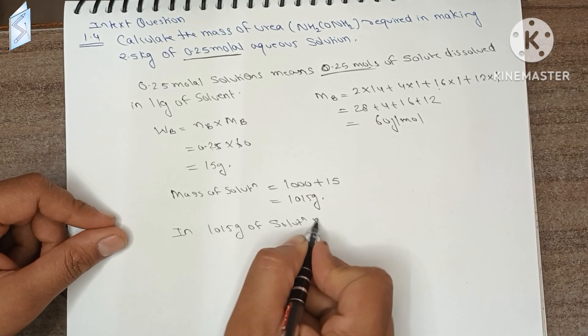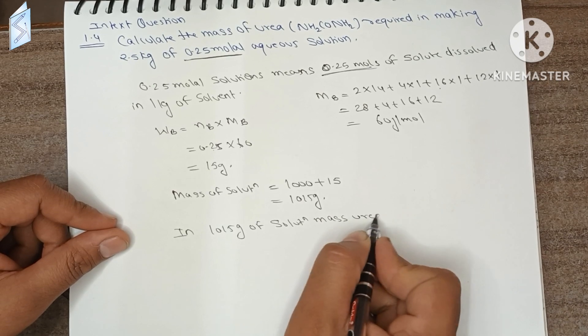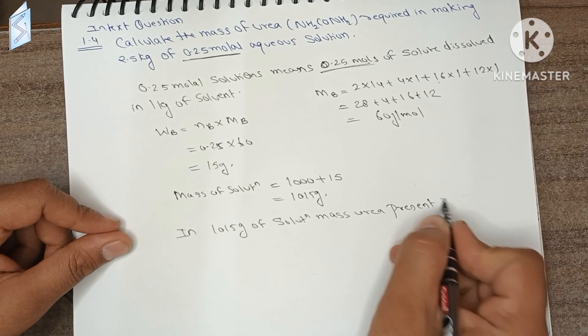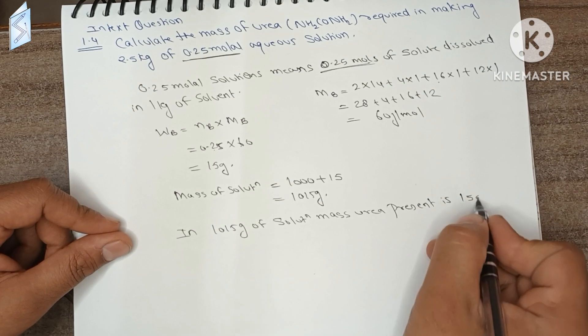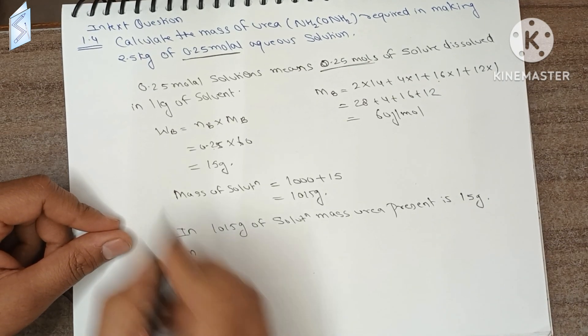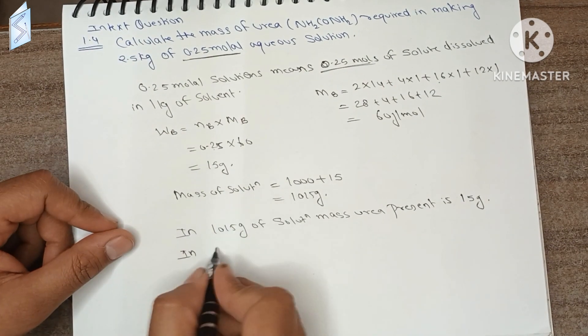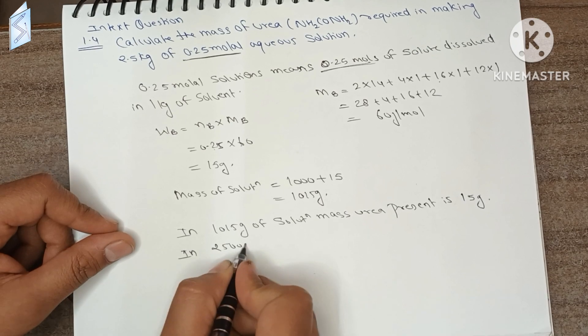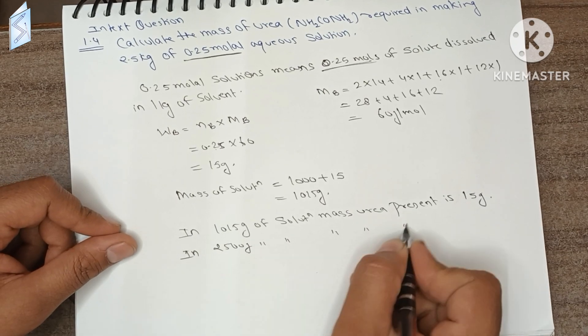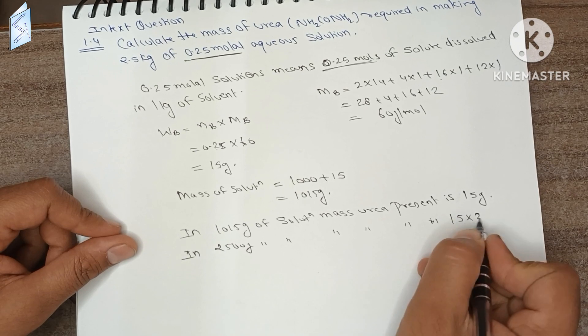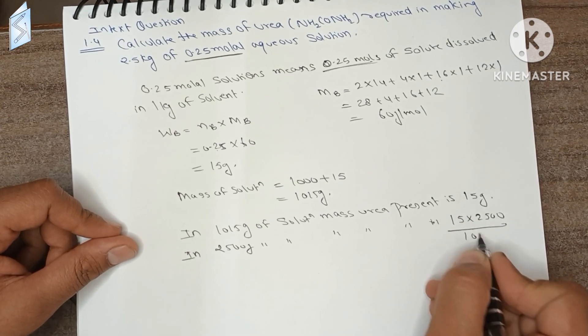So in 2.5 kg, which means 2500 gram of solution, mass of urea present is 15 into 2500 divided by 1015.